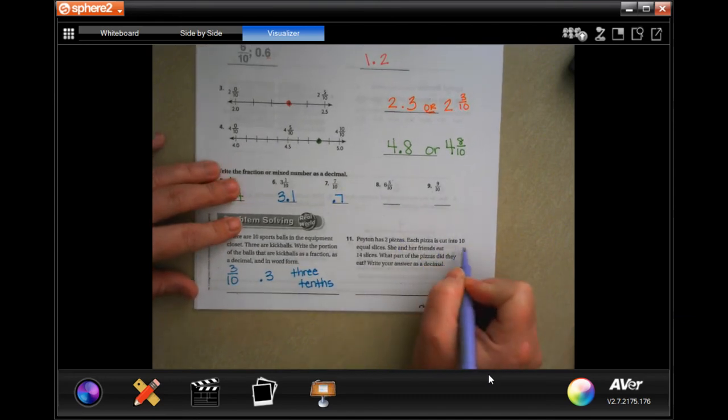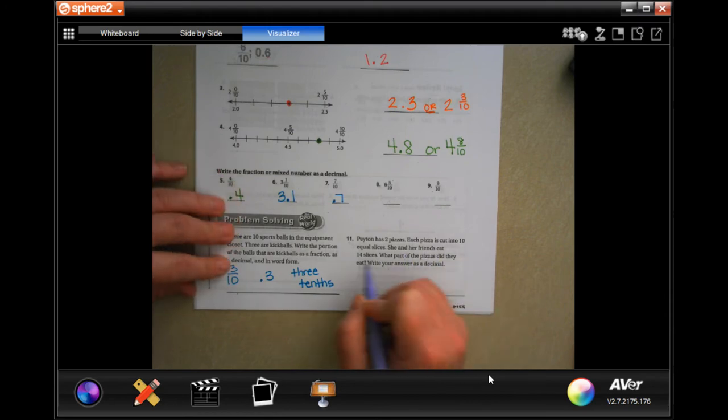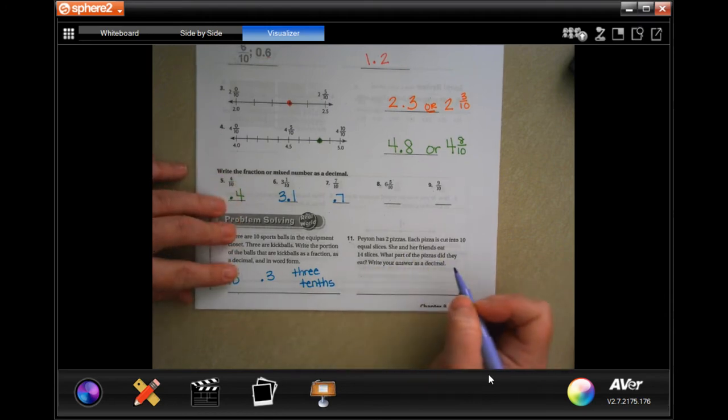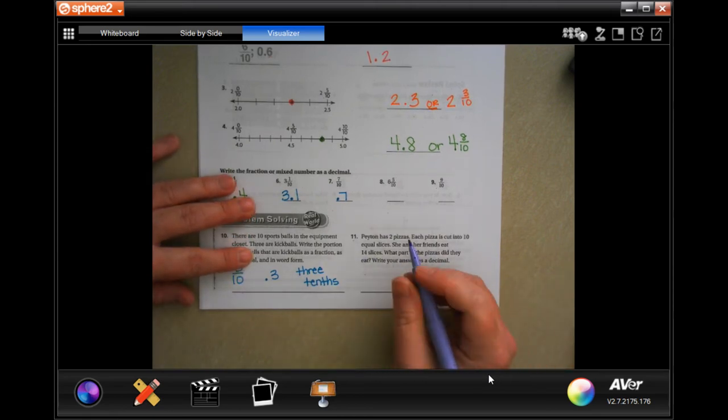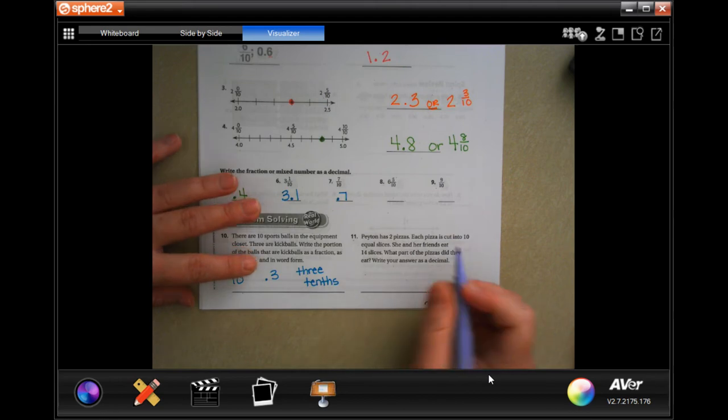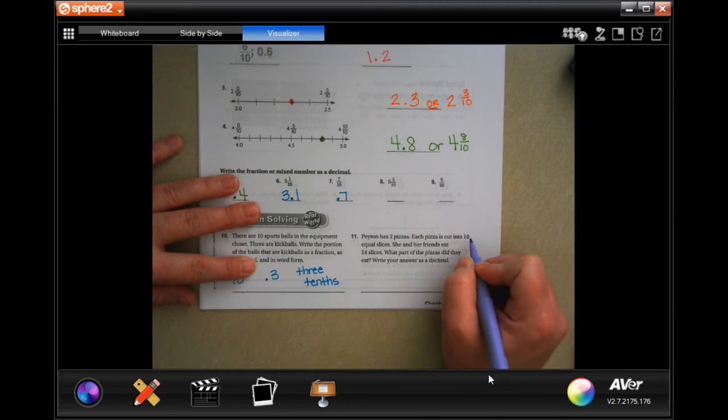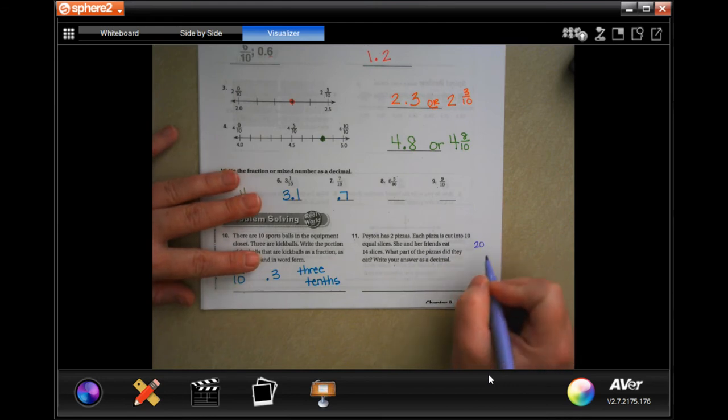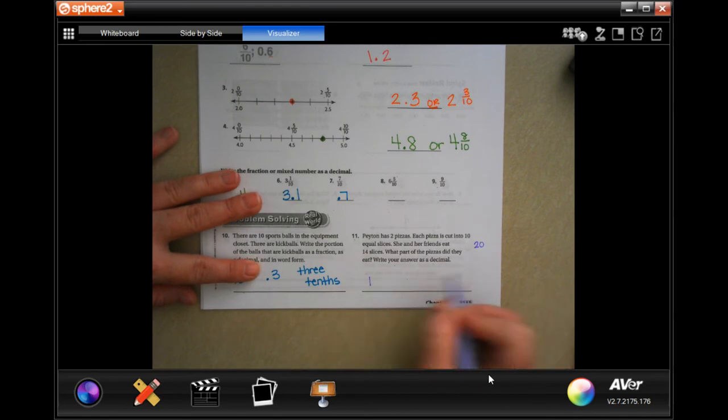There's two pizzas, each pizza cutting to ten equal slices. She and her friend eat 14 slices. What part of the pizzas did they eat? So if they have two pizzas and each are cut into ten, that means they have twenty pieces total. Now they ate 14 of those, so they ate one whole pizza and then four more slices. So 1.4 pizzas, because they ate one whole one and four more slices.